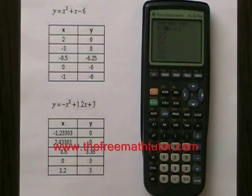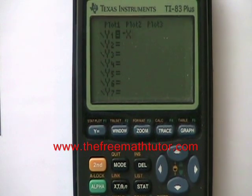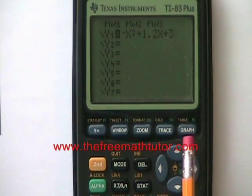If I go into y equals and hit clear, it removes the first equation. Now it's time to enter the second equation. I'm hitting the minus sign key, x, the x squared key, plus 1.2x again, plus 3. And I hit graph.